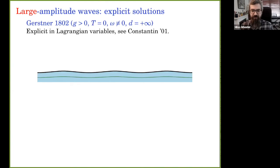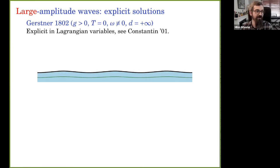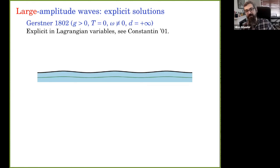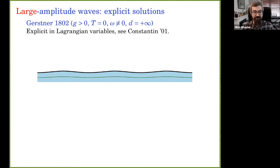That was a preamble on small-amplitude waves. Now I want to focus on large-amplitude waves. Somewhat confusingly the history here is earlier: the first serious large-amplitude solutions are explicit solutions due to Gerstner in 1802 — about 40 years before Airy and Stokes. These waves have gravity and vorticity but no surface tension, and they're explicit in Lagrangian variables, meaning the particle paths themselves are explicit. For a nice proof, see Adrian Constantin's 2001 paper.